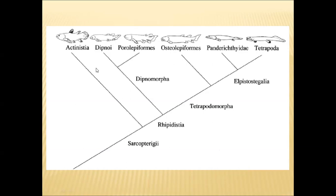One is Actinistia, another one is Dipnoi, and the next one is Tetrapoda. Tetrapoda is given another superclass designation, but according to phylogenetic relationships, Tetrapoda is not a separate group — it is a subgroup of Sarcopterygii only. Over a period of time, scientists have been studying Tetrapoda as a separate superclass, so we are continuing with that classification. But to be precise, Tetrapoda is a subgroup of Sarcopterygii only.